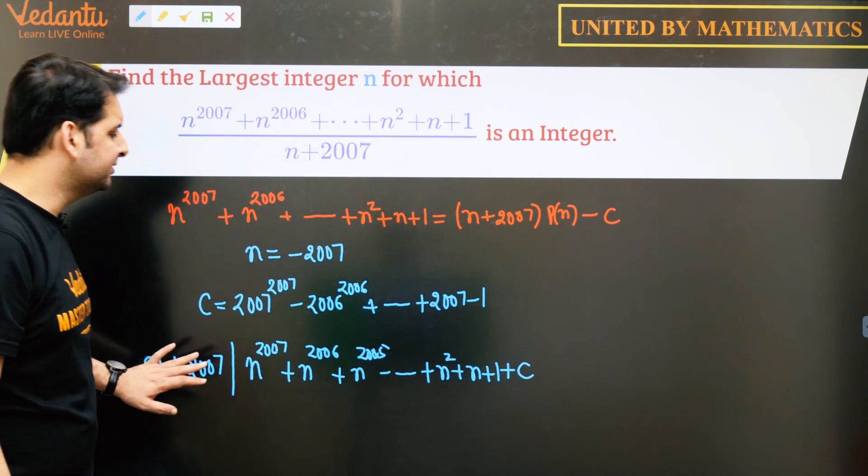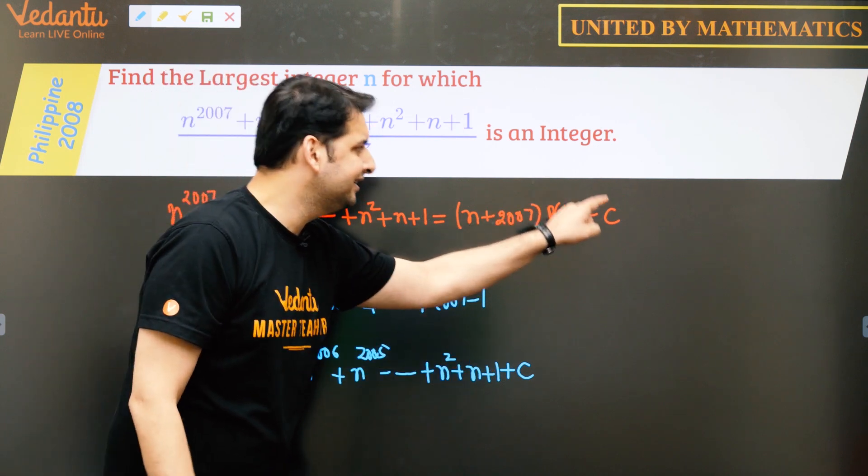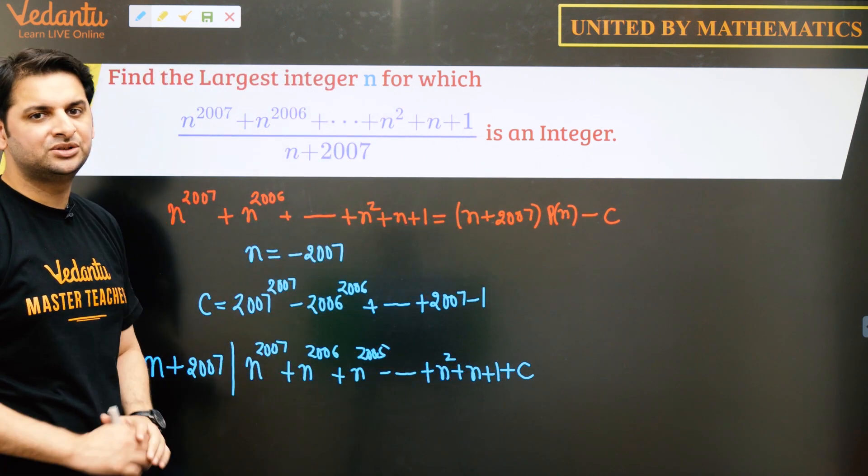So clearly, n plus 2007 divides this because if we take c to the left hand side, this is divisible by n plus 2007.